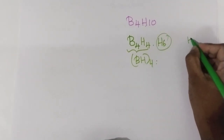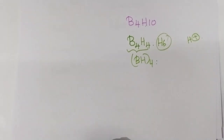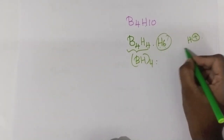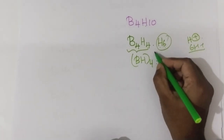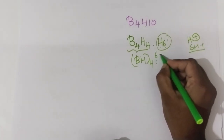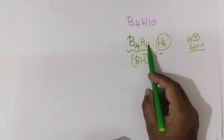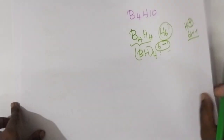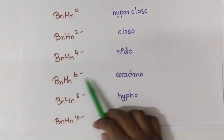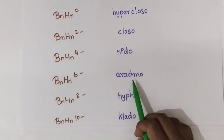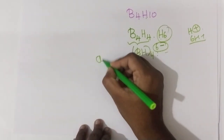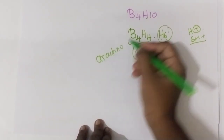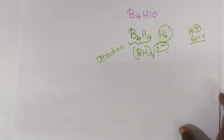So you will have a charge of 6 minus on B4H4. I told you that if you are having a charge of 6 minus, then the structure of the borane is arachnoborane. Hence, B4H10 will have the structure of arachnoborane — it belongs to arachnoborane. This is how you have to find out the structure.